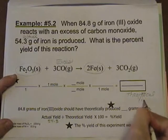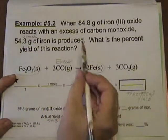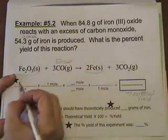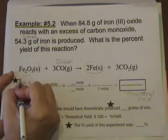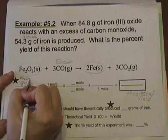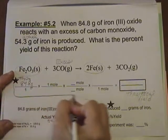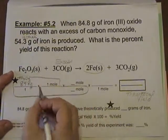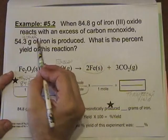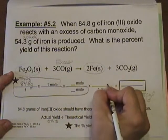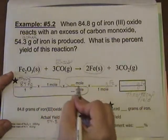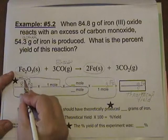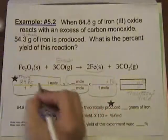That's going to go right here, 54.3. Theoretical yield. We're going to put our known here, 84.8 grams of this. So Fe2O3 is part of the brush. We want to know how much iron should be made if we lived in a perfect world. So I'm going to need the molar mass of Fe2O3, which is 159.6.